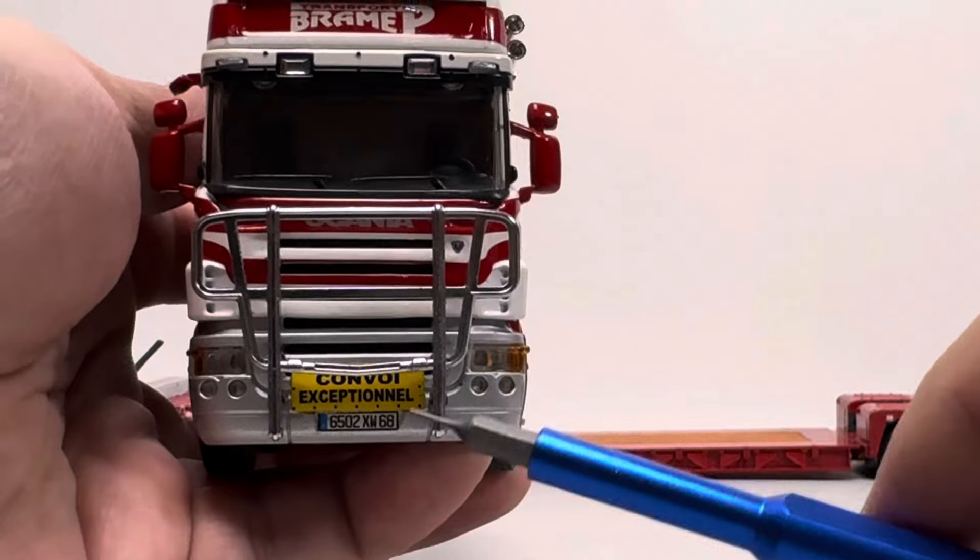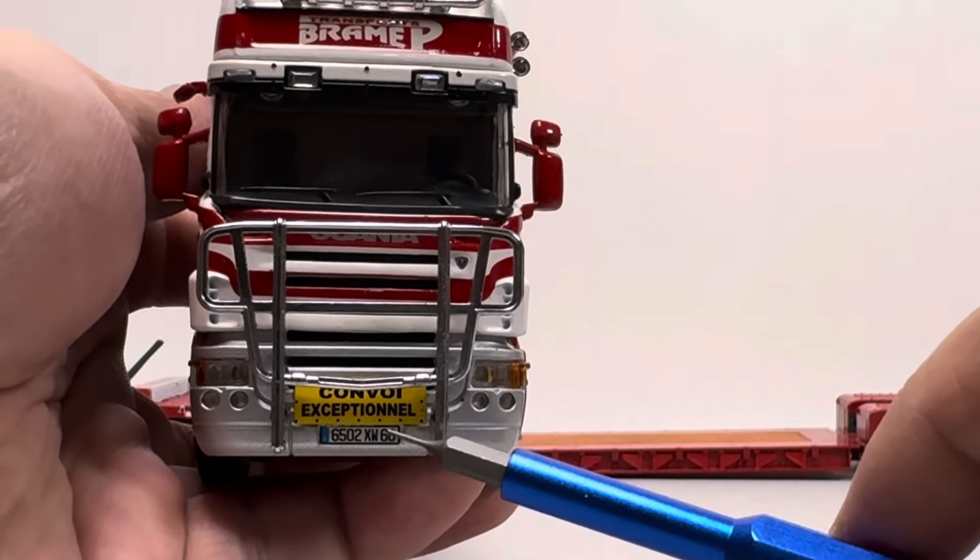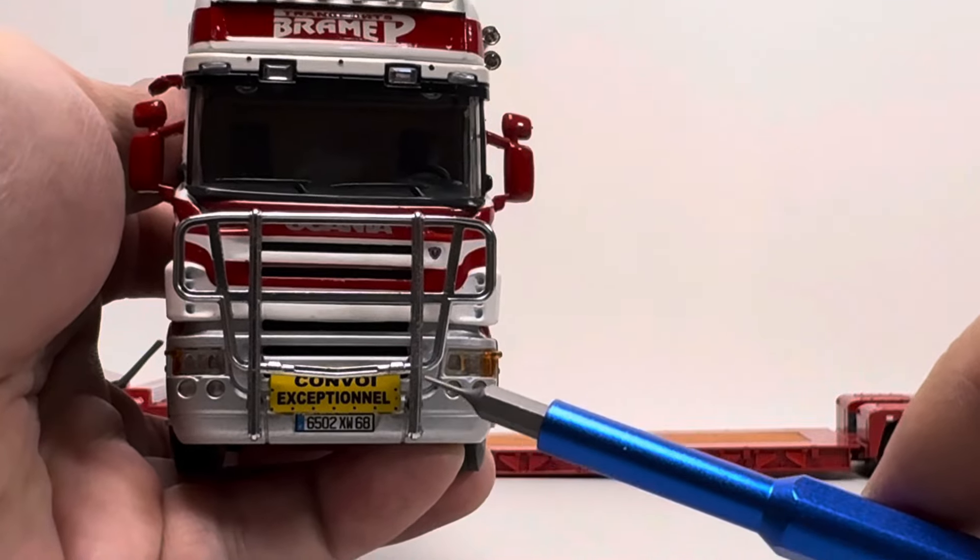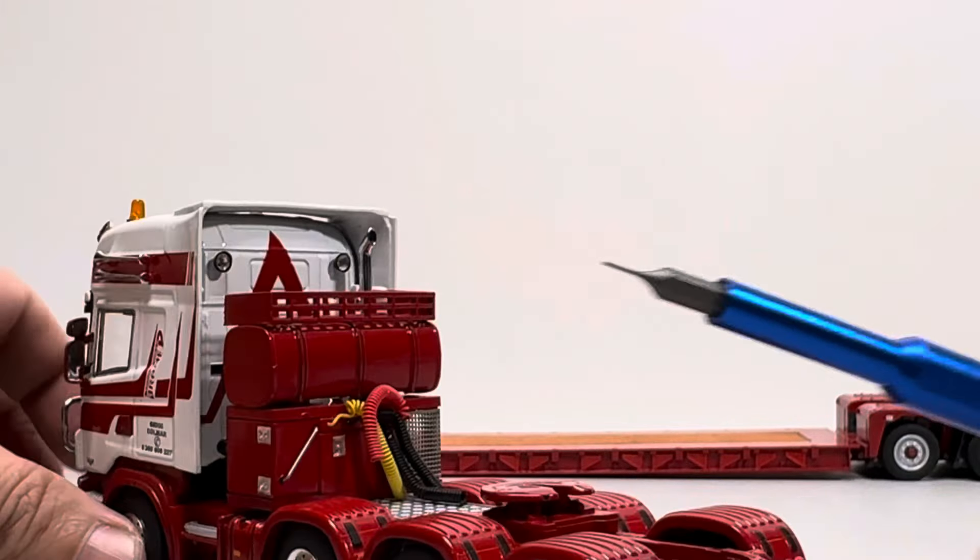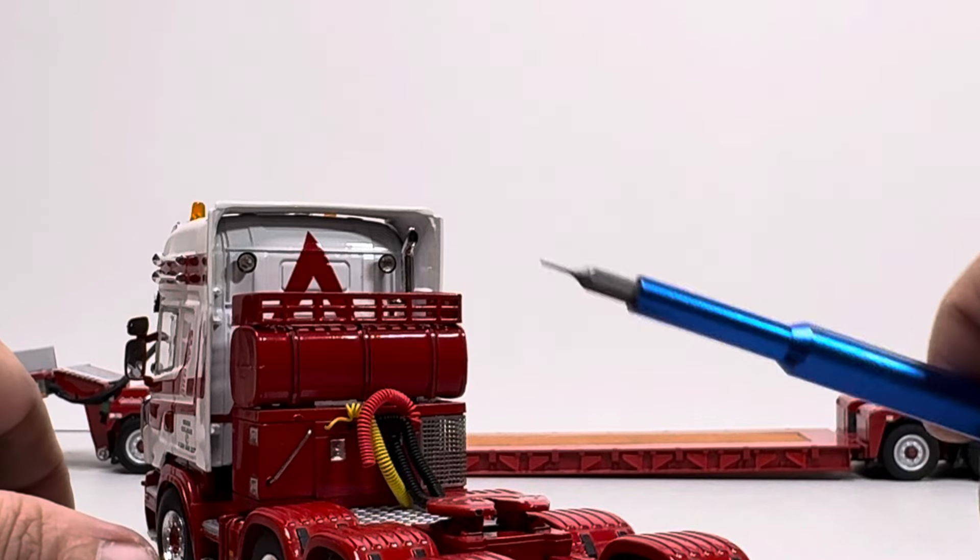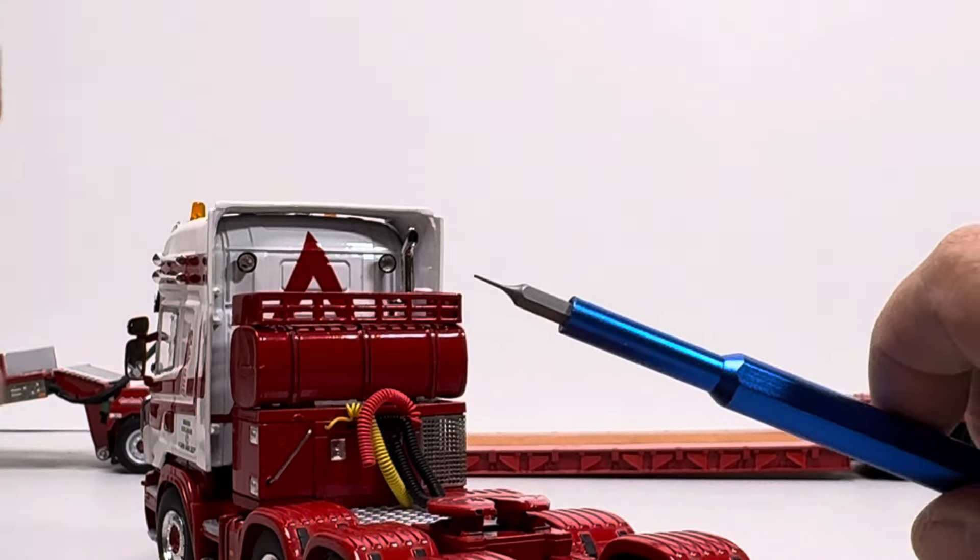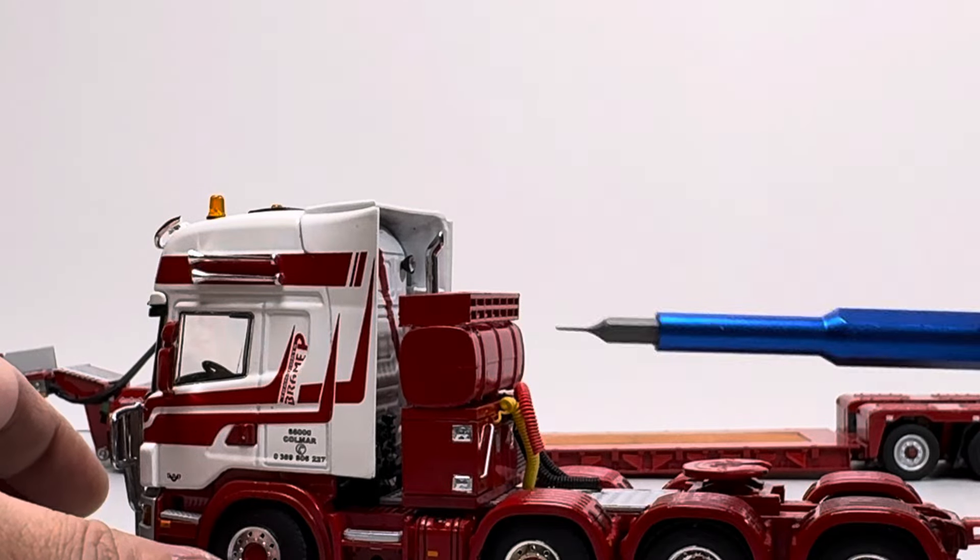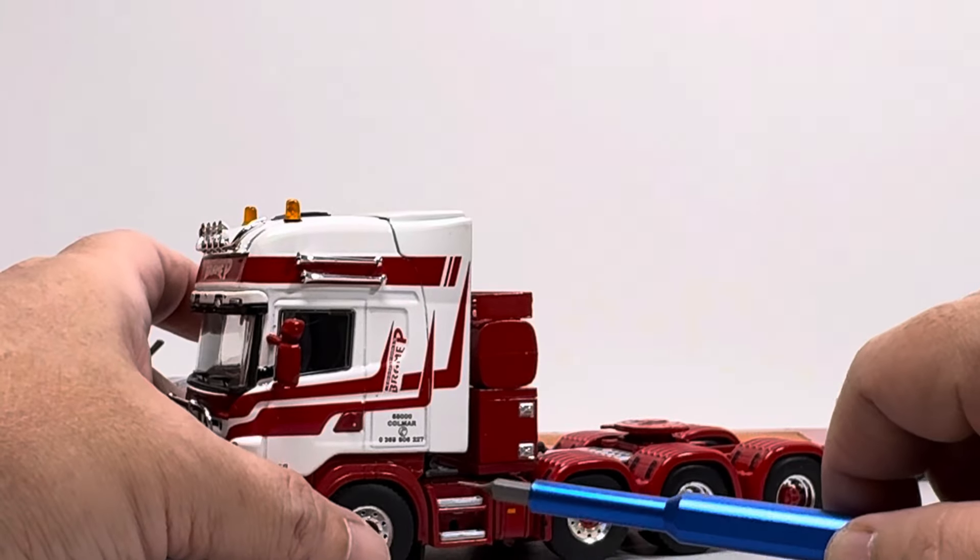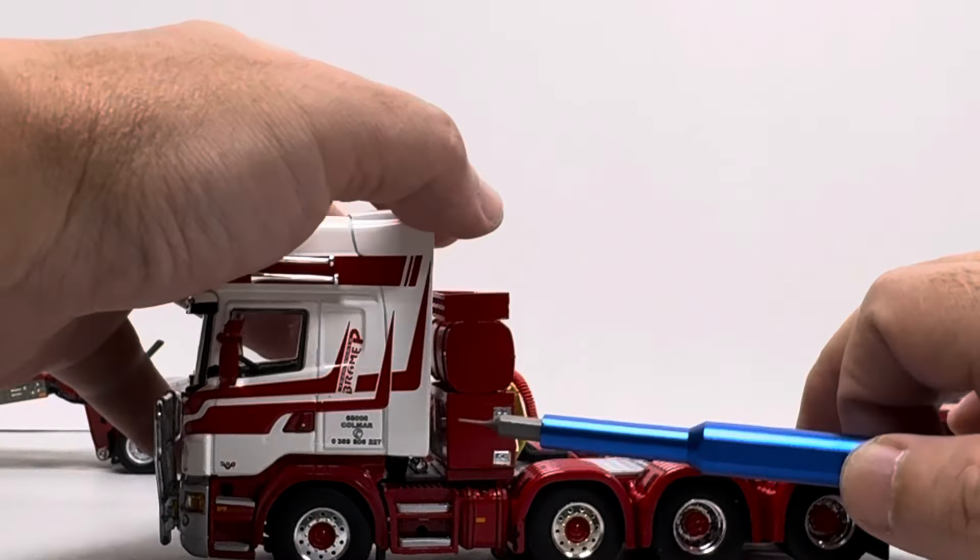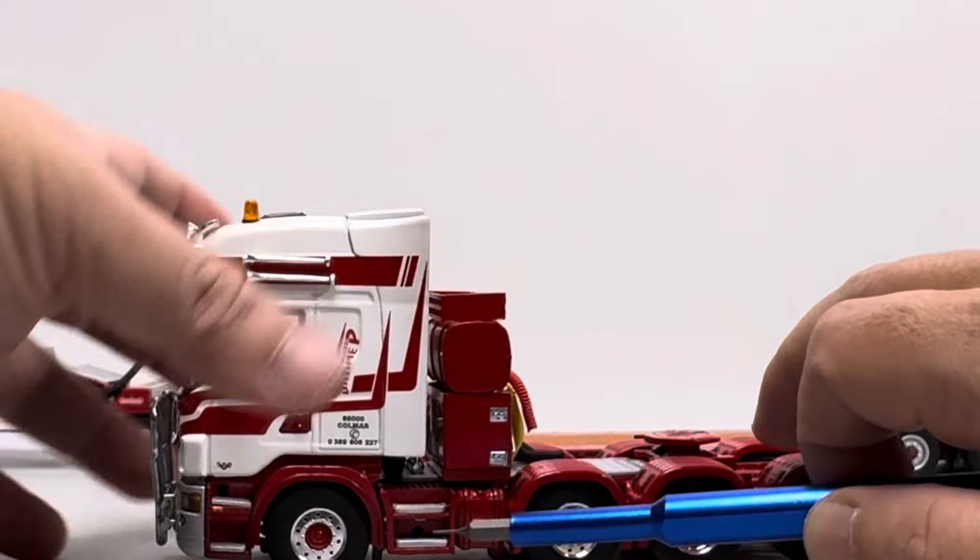Ini ada plat number, nah ini khusus convoy exception direkt belakangnya untuk elektrikan kabel-kabelnya juga lengkap. Di sini ada kompresor semua di sini ya. Di sini ada step untuk naiknya untuk di belakangnya kalau kayak maintenance untuk ke mesinnya apanya semua dari sini naiknya.